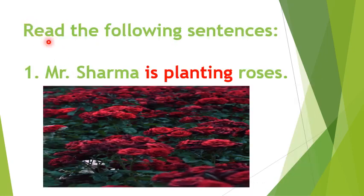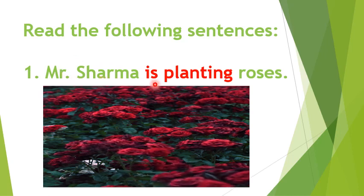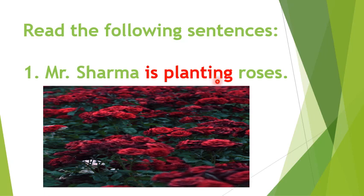Read the following sentences. Number 1: Mr. Sharma is planting roses. In this sentence, Mr. Sharma is the subject, 'is' is the helping verb, 'planting' is the main verb, and 'roses' is the object. So, whenever the helping verb 'is' is there and the verb with the -ing form is given, the sentence belongs to present continuous tense.